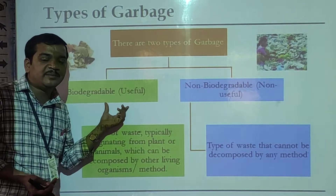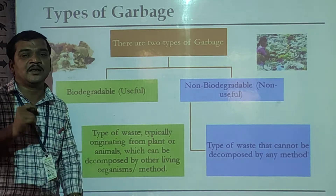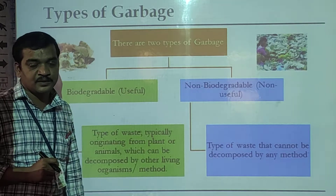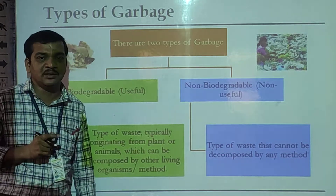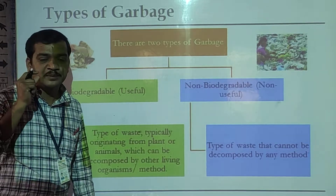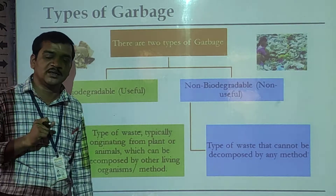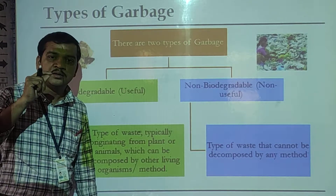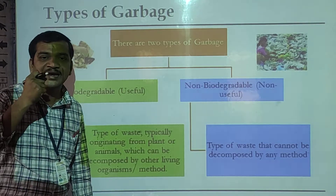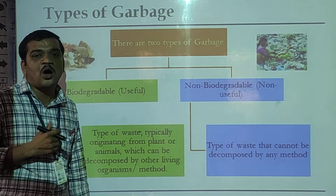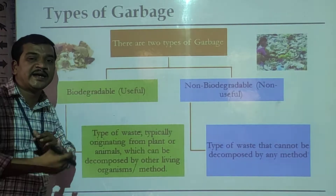Biodegradable is also called the useful components. Examples include peels of fruits, parts of vegetables, paper, pieces of paper, stalks of plants, and dry leaves — all these are biodegradable components.